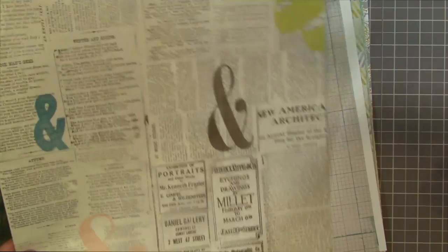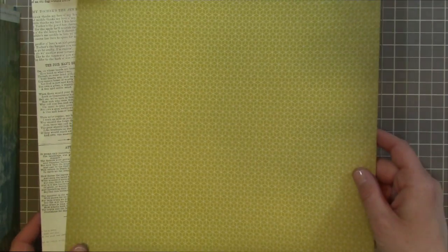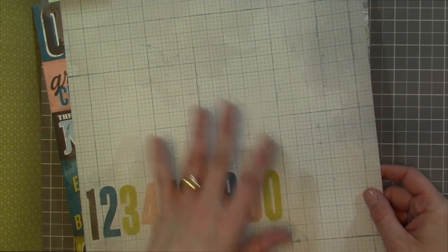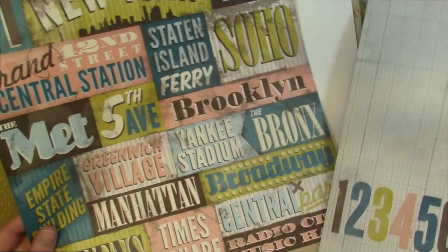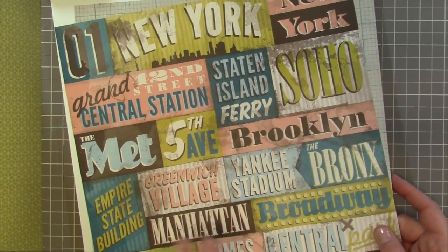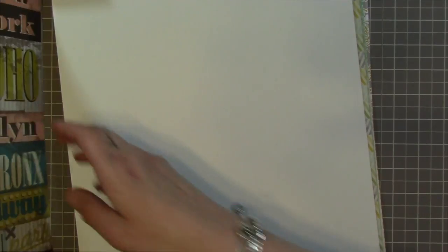A little New York City there. We have newsprint, that's the back side. And then this one right here is a grid with the numbers on it and then on the front it has a whole bunch of New York kind of themed things which I think I'm going to be using for our trip to New York that we took last summer.